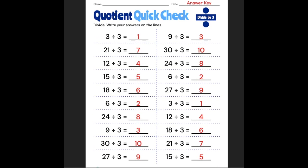3 divided by 3 is 1. 21 divided by 3 is 7. 12 divided by 3 is 4. 15 divided by 3 is 5. 18 divided by 3 equals 6.